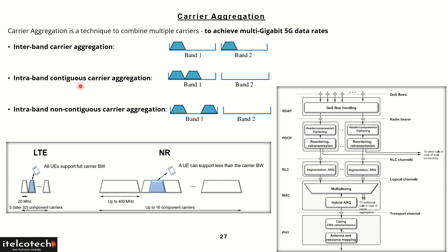One possibility could be we have a contiguous carrier aggregation within band one. For example, with millimeter wave, we just pick up one contiguous band of say 50 or 100 MHz straight away in continuity. Or, it could be possible that within millimeter wave, if we are not getting a contiguous 100 MHz, we can pick up two different 150 MHz chunks and then aggregate them together. There are different possibilities available in 5G to aggregate different carriers so as to achieve the multi-gigabit data rates.